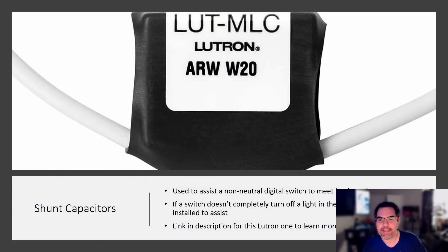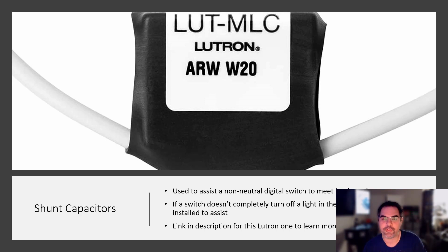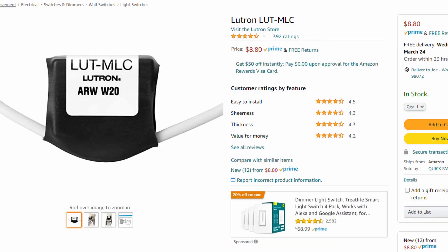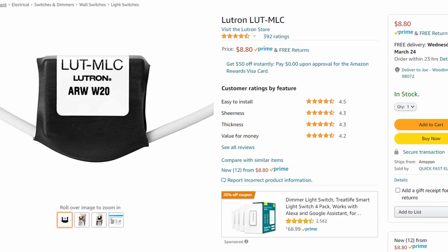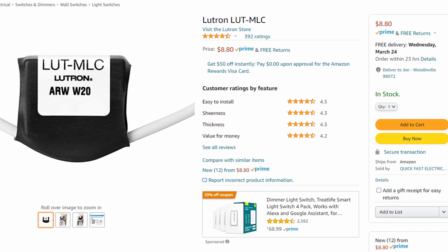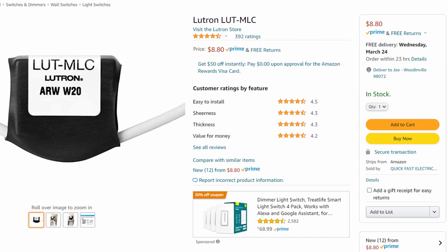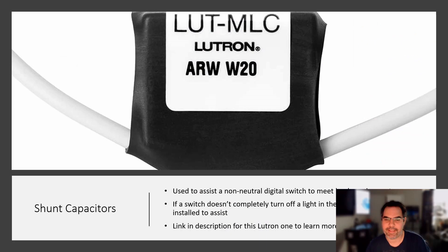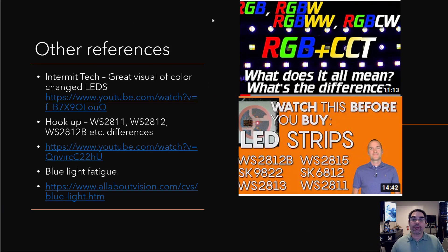One last problem you might hit is turning the light off and it doesn't turn all the way off — it either flickers or stays dimly lit. This is typically on a dimmer switch where you're not using a neutral wire, just the black wire. In that case, you need what's called a shunt capacitor that assists the load and helps you get the light all the way off. I'll link to it in the description so you can read up on it. Thanks to my friend Lou who hit this problem and informed me about it.